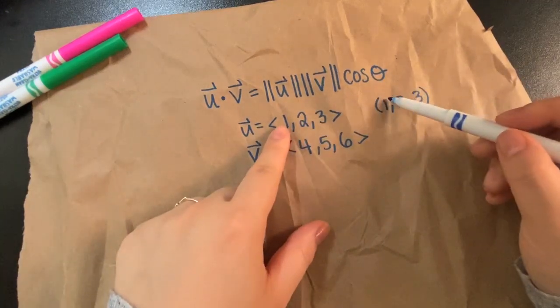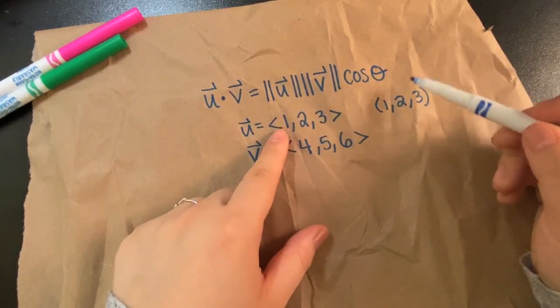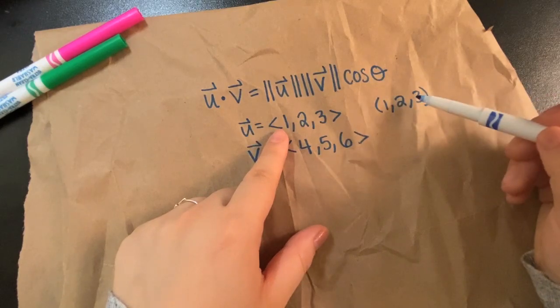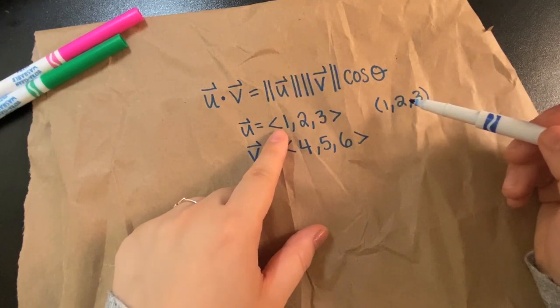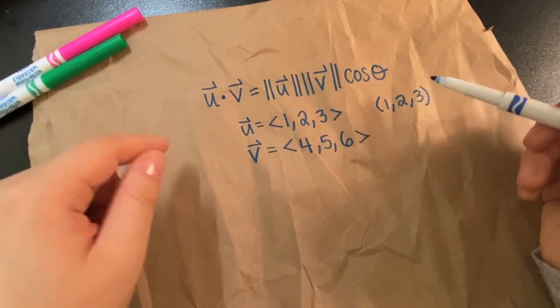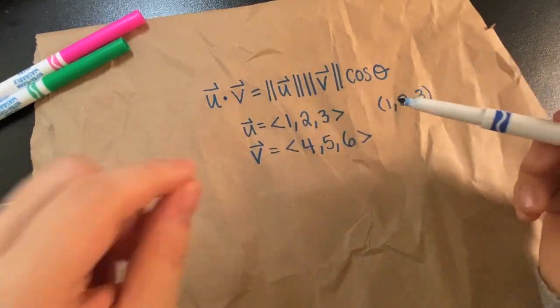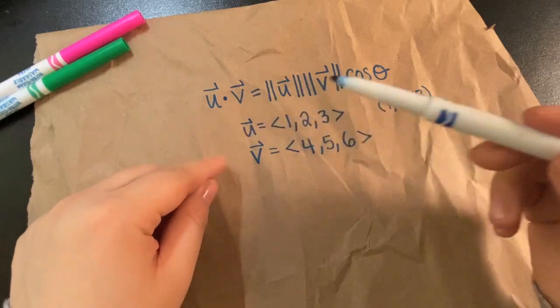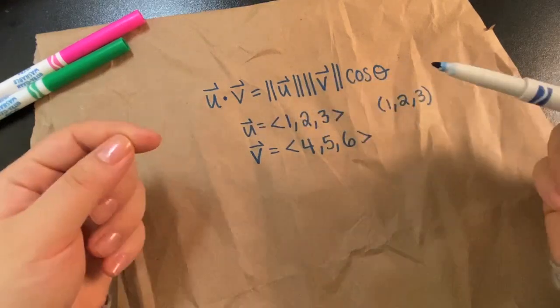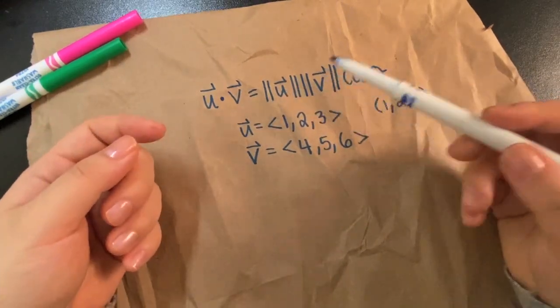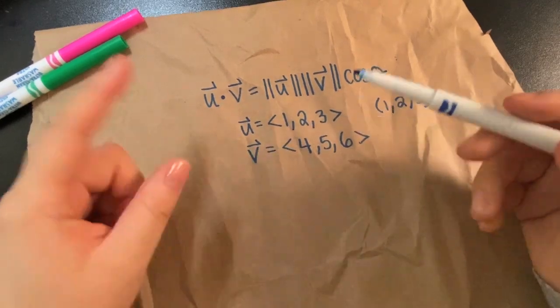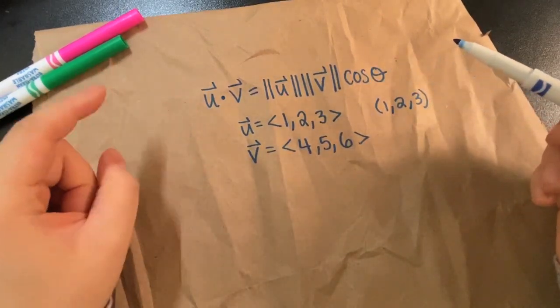You draw this as though it's a point in three-dimensional space. And if I draw the arrow from zero, zero, zero to this one, two, three, that makes a vector from this to that. So that's going to be an arrow. And it's going to have a particular length, which is the magnitude of U. So same thing for this. Those are our two vectors.